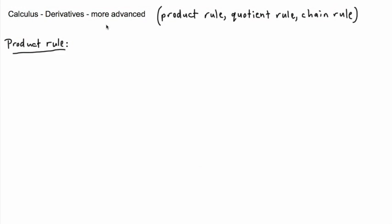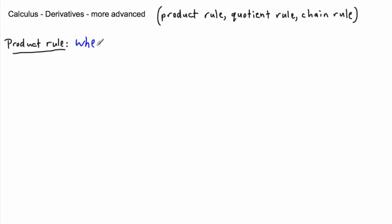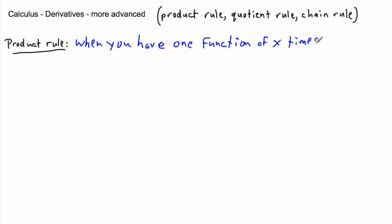Now we can do some more advanced derivatives — things like the product rule, quotient rule, and chain rule. I'm going to show you first the product rule and what that actually means. The word 'product' implies multiplying, so when you have two functions of x multiplied by each other, that's when you're going to use this.